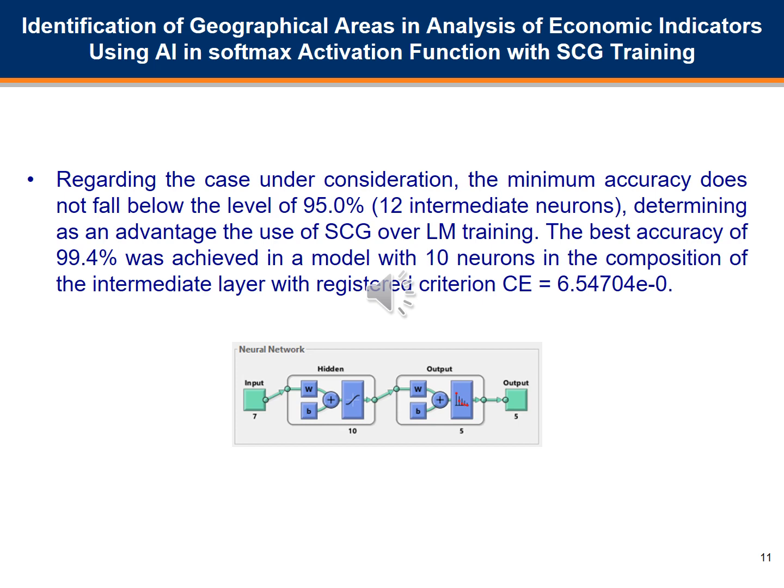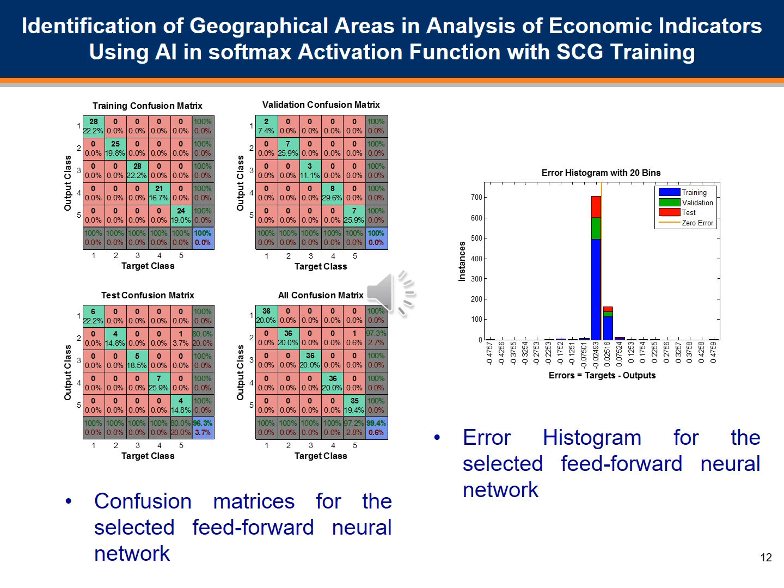The selected neural network is shown below. Accuracies for the processes of training, validation, and testing from the generated confusion matrices are registered in sequential order as 100%, 100%, 96.3%, and 99.4%. The histogram of errors from the training, validation, and test procedure shows values at approximately minus 0.025 in the immediate vicinity of the zero error line.